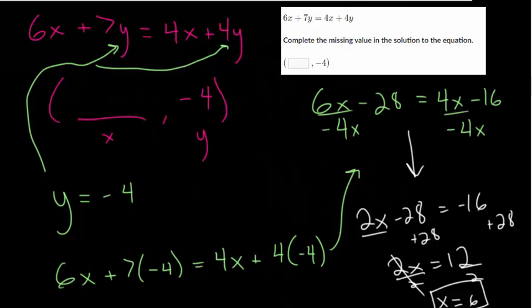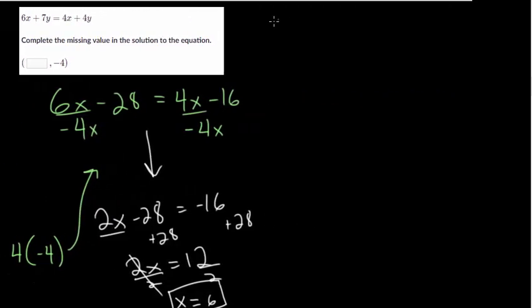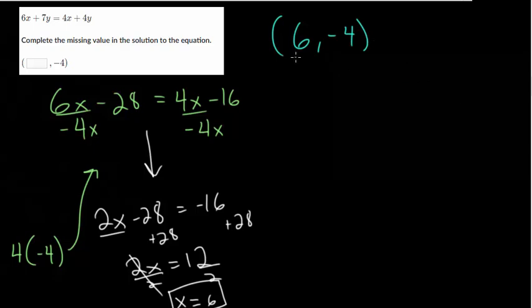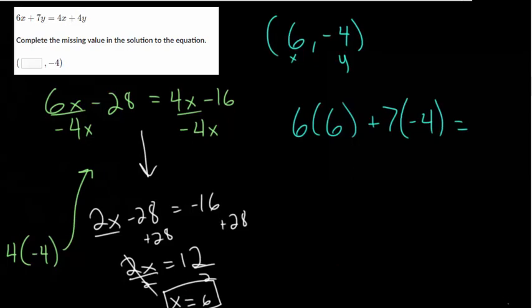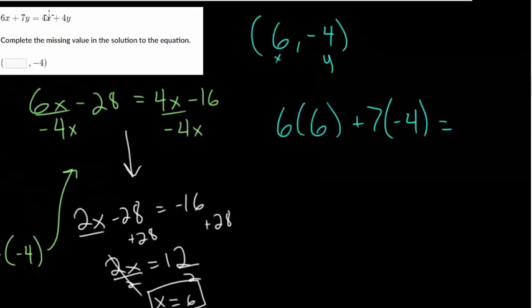So let me make some room and go ahead and do that for you. So we think the solution is 6 comma minus 4. So x is 6 and y is negative 4. So we plug those in. You get 6 times 6 plus 7 times minus 4. And this should be equal, let me make just a bit more room, this should be equal to 4 times 6 plus 4 times minus 4. And now we can just simplify.